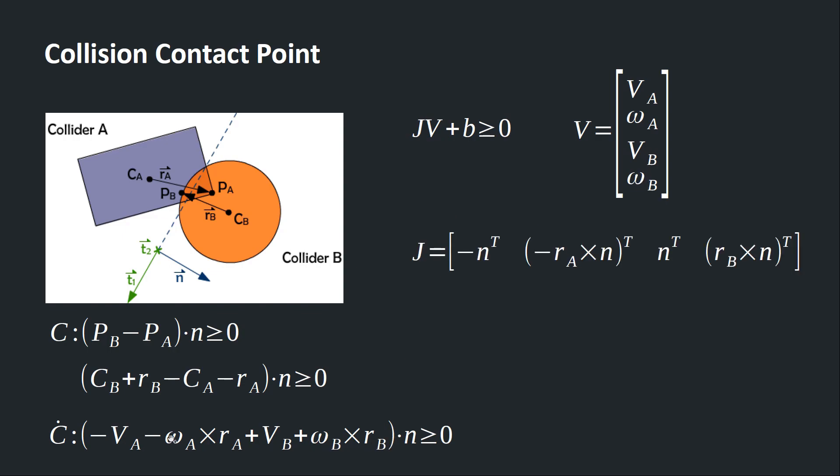By inspecting this equation, we can separate out the individual coefficients of VA, omega A, VB, and omega B into our Jacobian matrix, which is this guy. Once we have this, we can come up with the equation for lambda. Just plug this J into this equation and we'll have our lambda, which is our necessary impulse to fix the violated contact constraint.